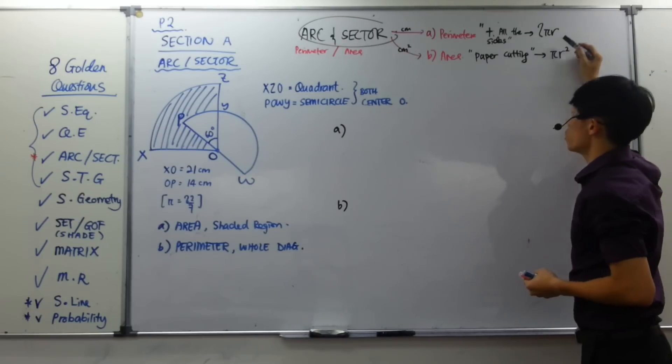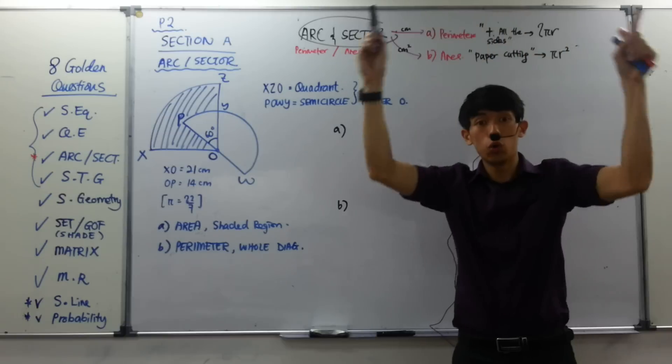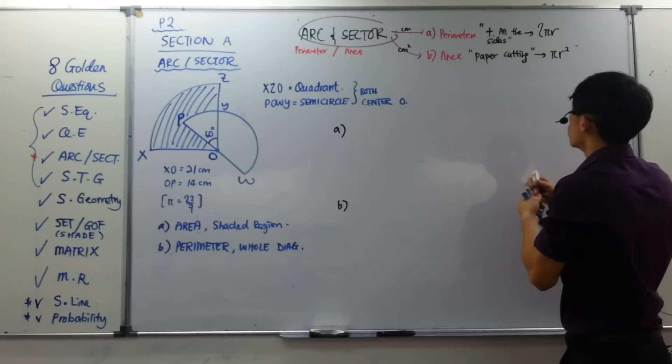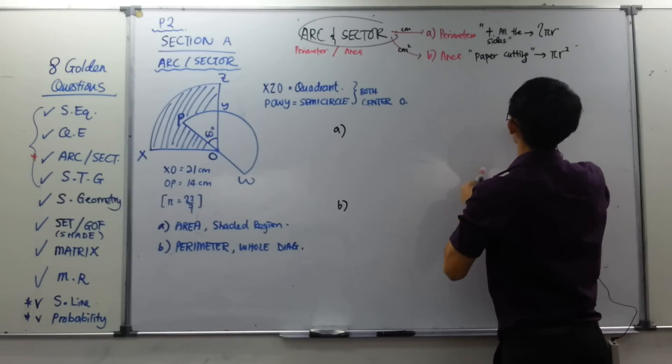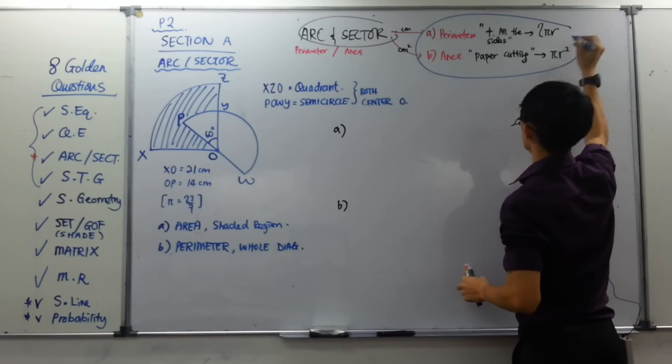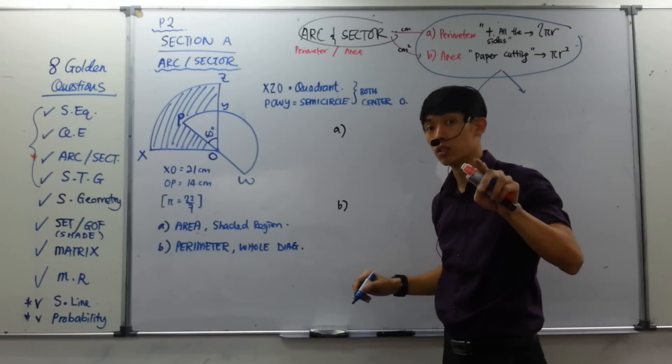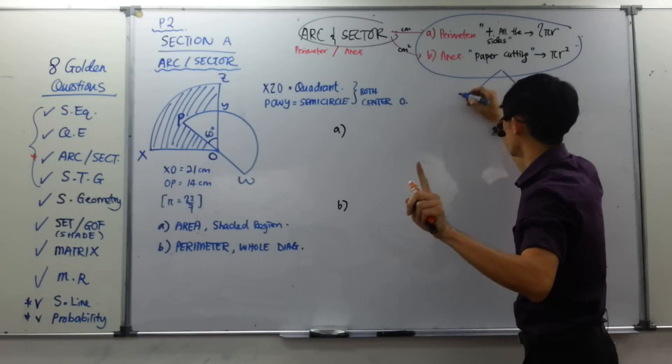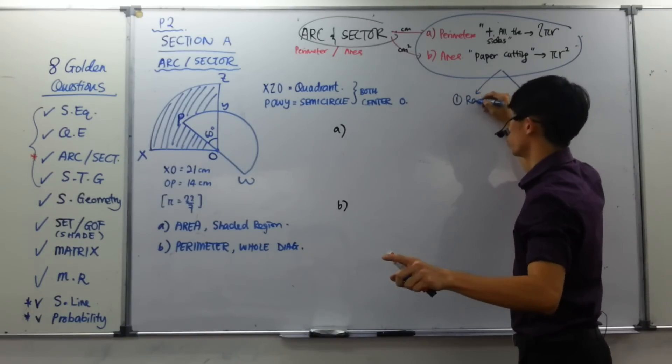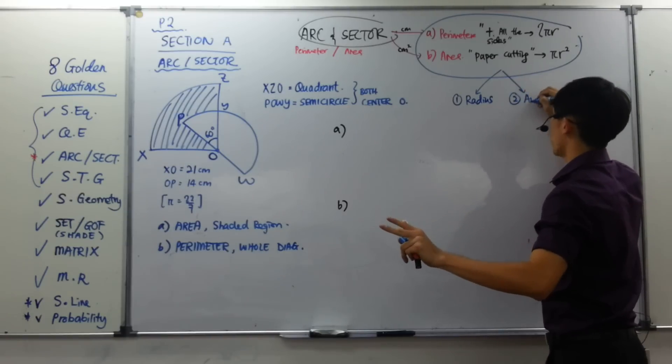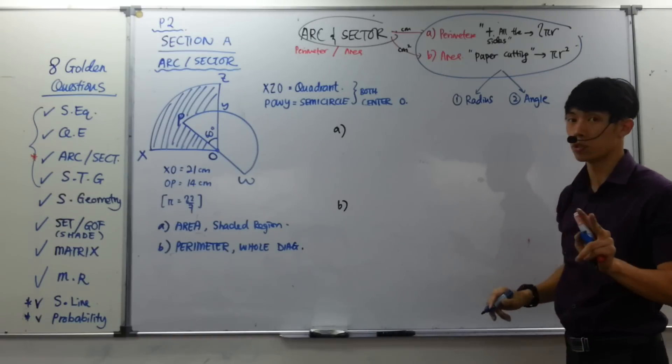Just remember this way. Perimeter is the sides. It's called cm, unit wise. And area, we name it as cm squared. Square here. This is how I memorize. But of course, all this formula belongs to what? The whole circle. But I don't need the whole circle. I just need part of it. So to do part of it, what we do is, I will circle the whole thing here.